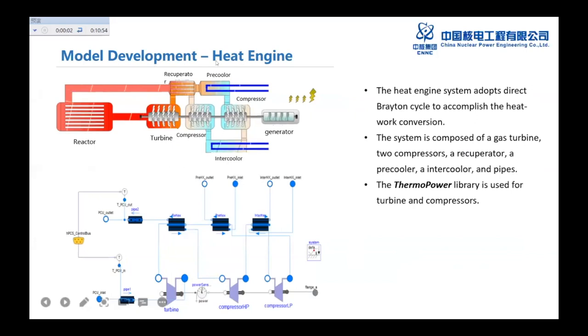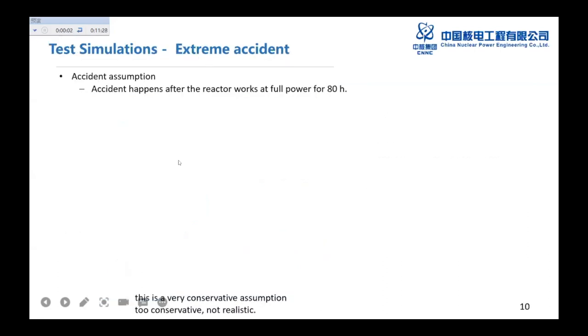And then this is about the physics. And then the model about the heat engine. The heat engine system, we use a direct helium between Brayton cycle. And this system composed gas turbine, two compressors. And the heat exchanger such as intercooler, precooler, and recuperators. And in this modeling, we use the thermal power library used in this modeling.